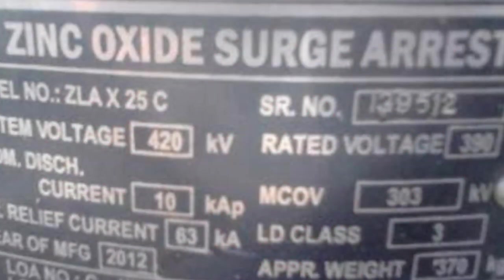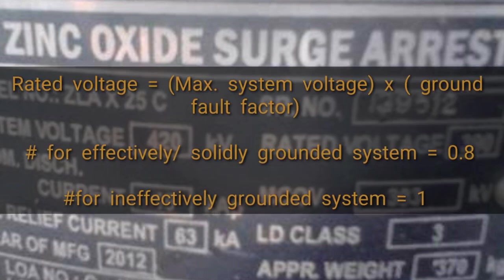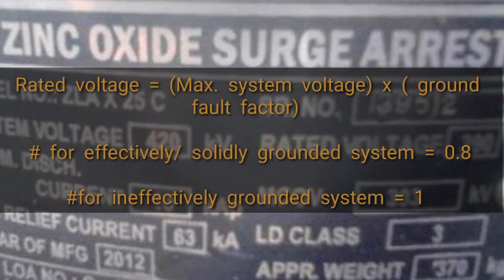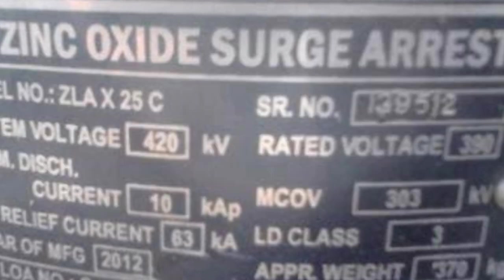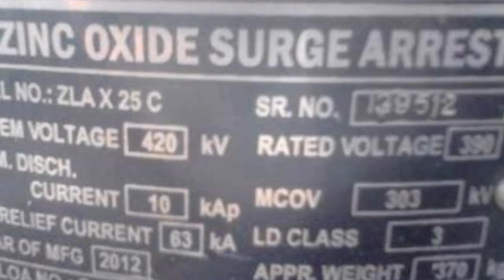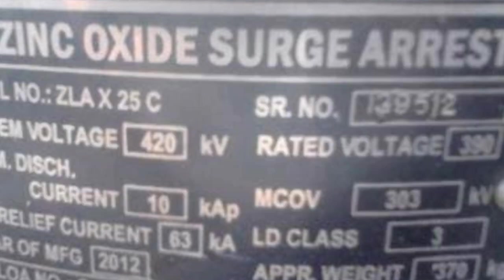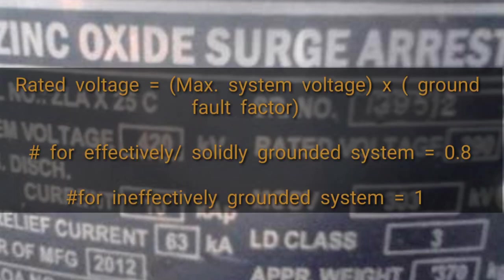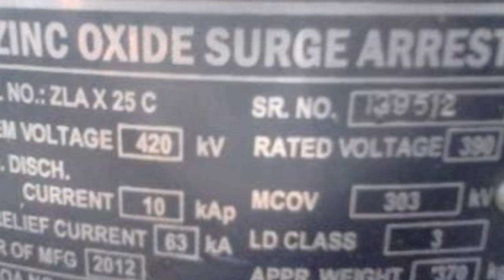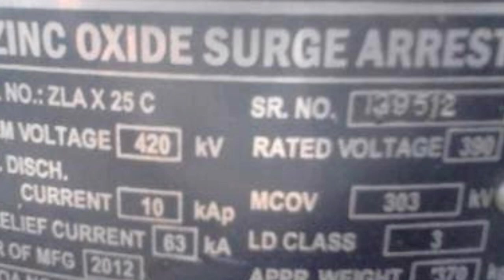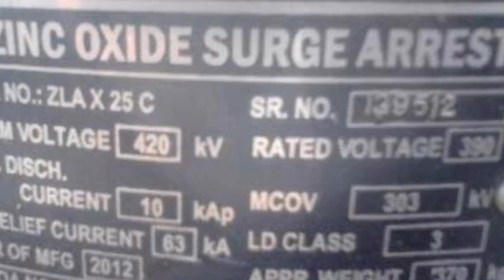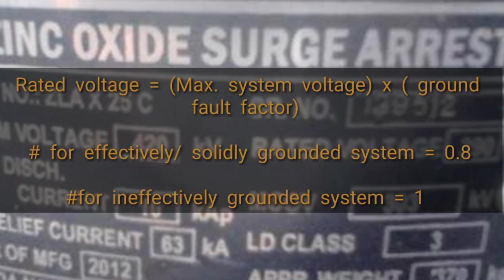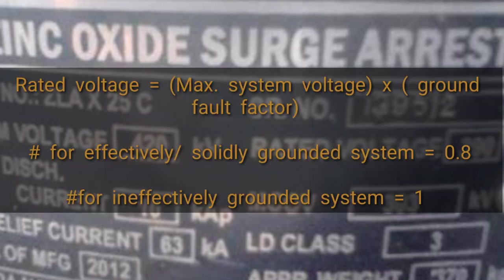Rated voltage equals maximum system voltage multiplied by ground fault factor. For an effectively solidly grounded system, the ground fault factor equals 0.8, and for an ineffectively grounded system the value is 1.